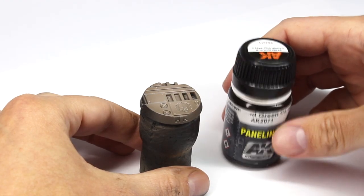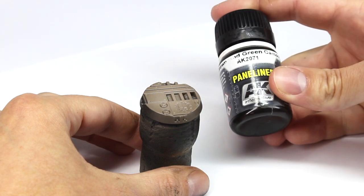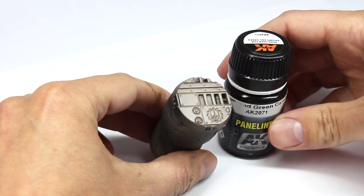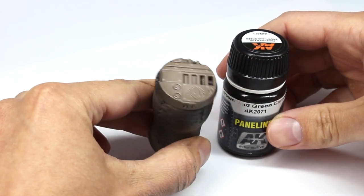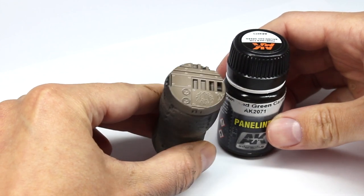The next product we're going to use is called an enamel wash. In this case a panel liner for brown and green camouflage by AK Interactive. And again I've put a thick gloss coat over the base to help remove any of that surface tension.